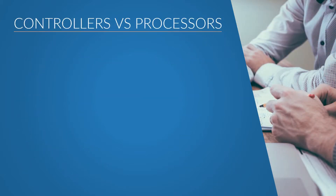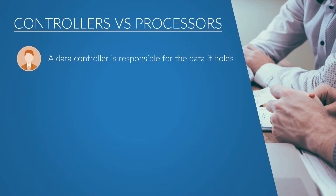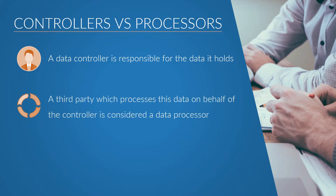Under the GDPR, an organization could be a data controller or a data processor. Essentially, a data controller is responsible for the data it holds. If it shares this data with a third party who processes the data on instruction from the controller, the third party is called a data processor.